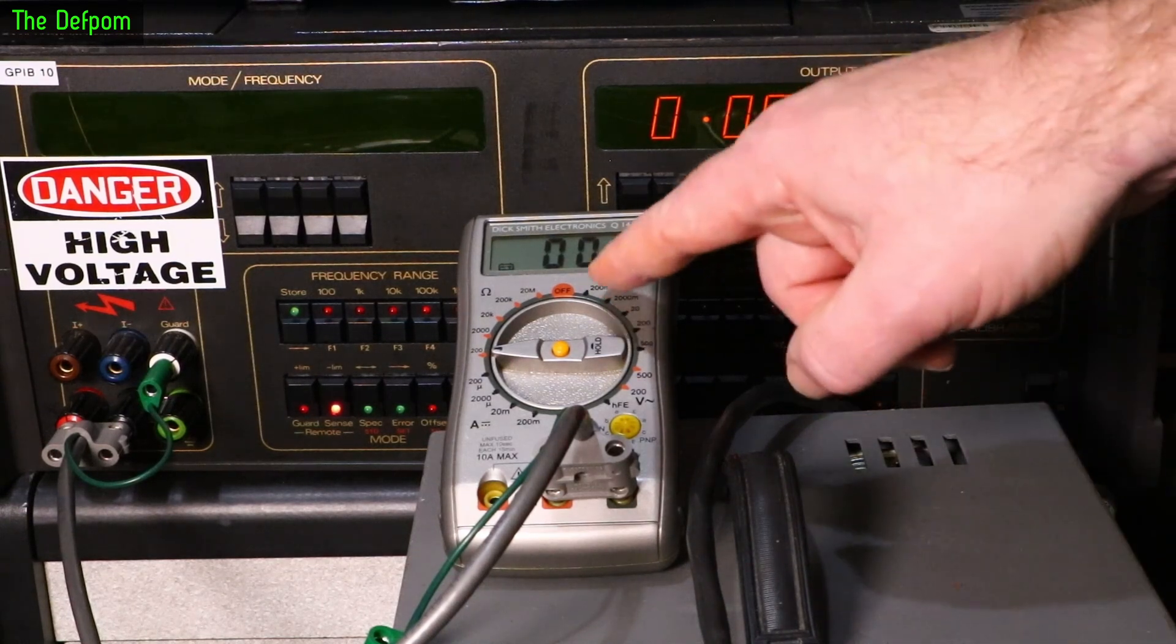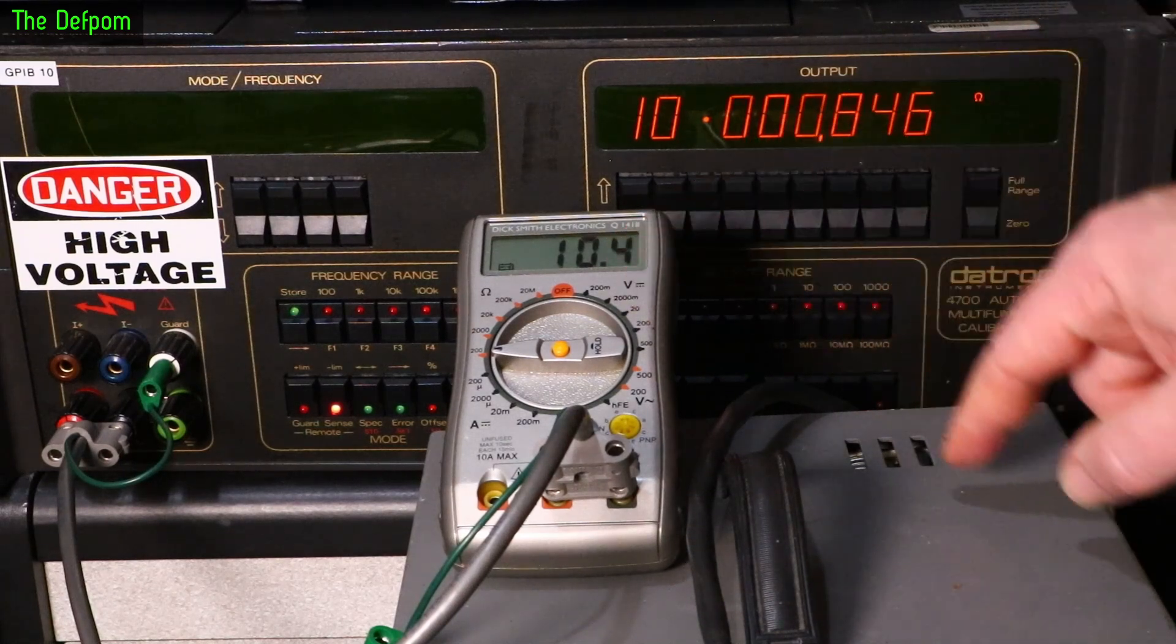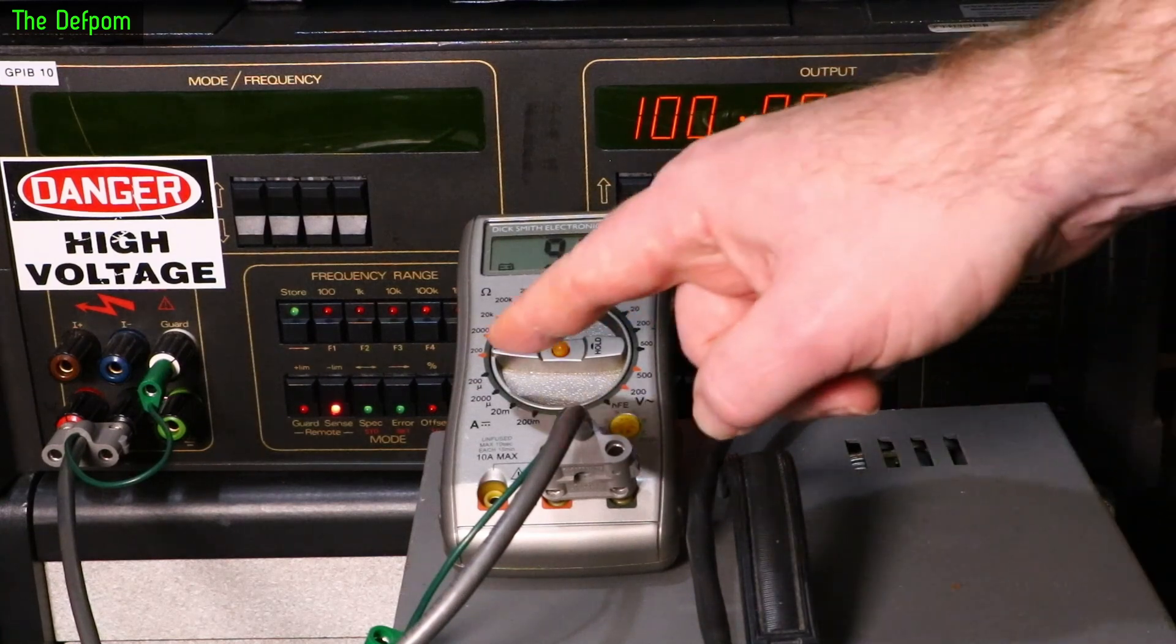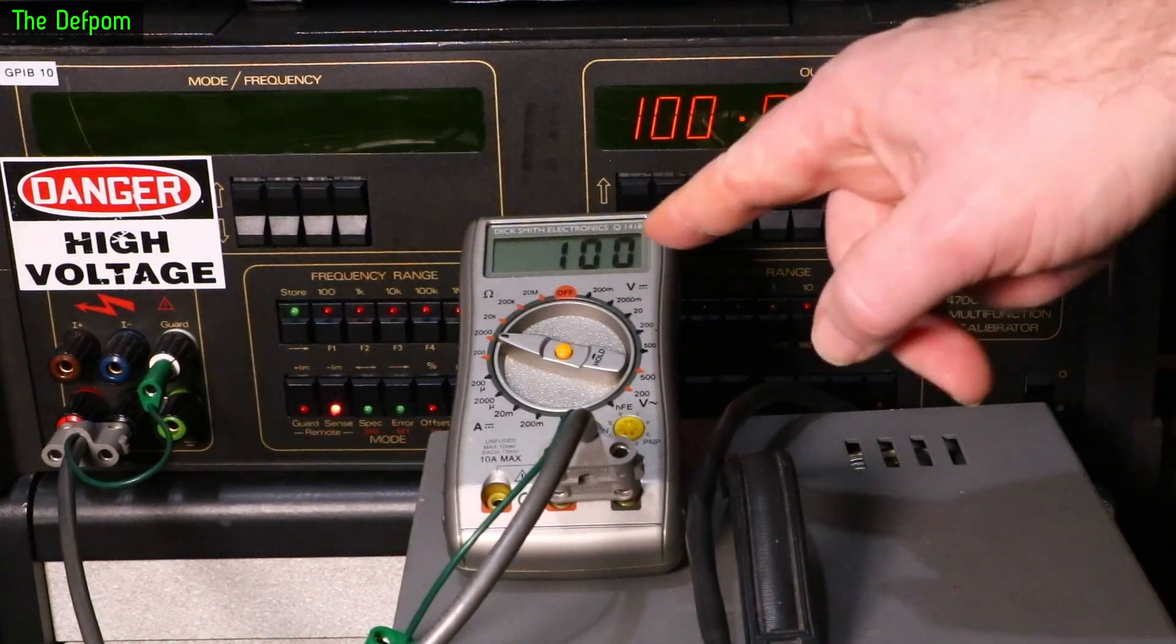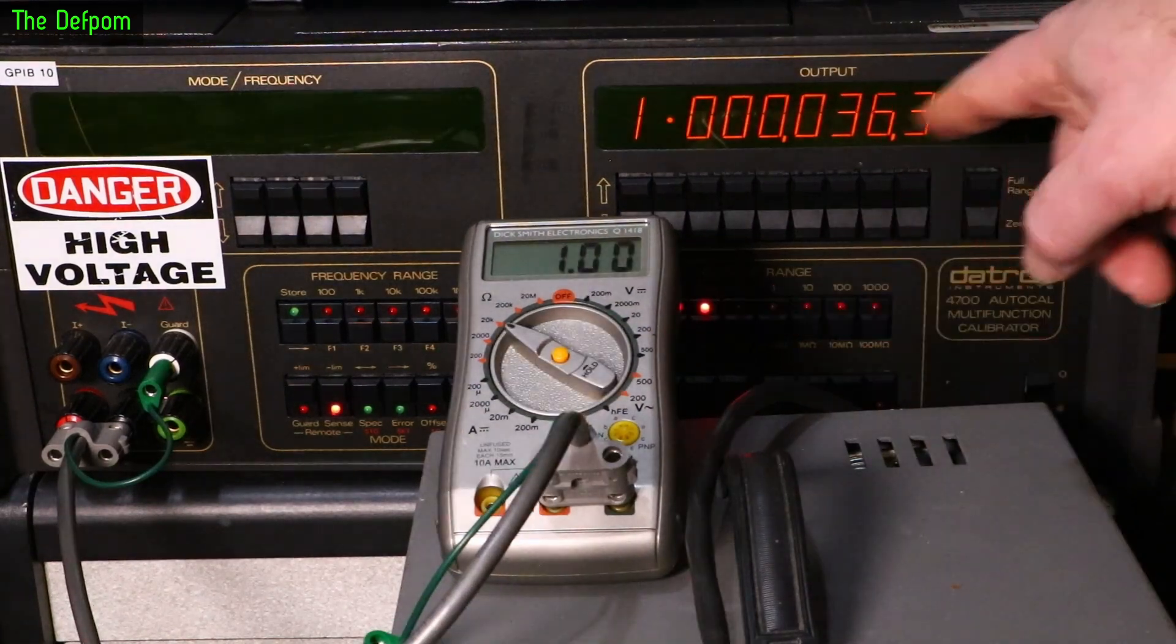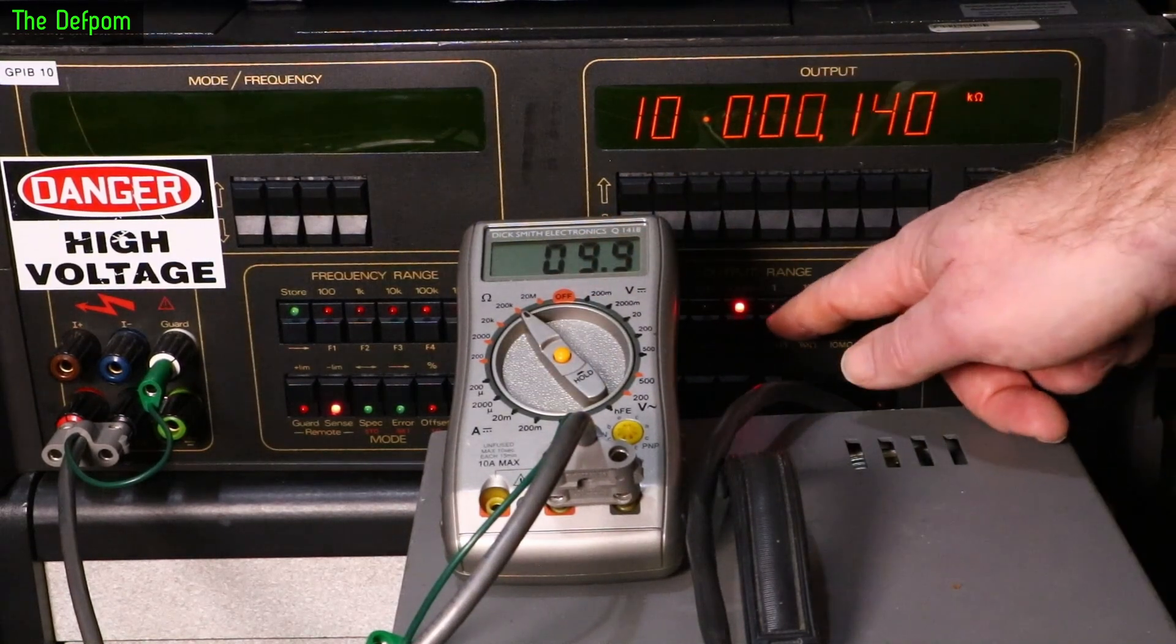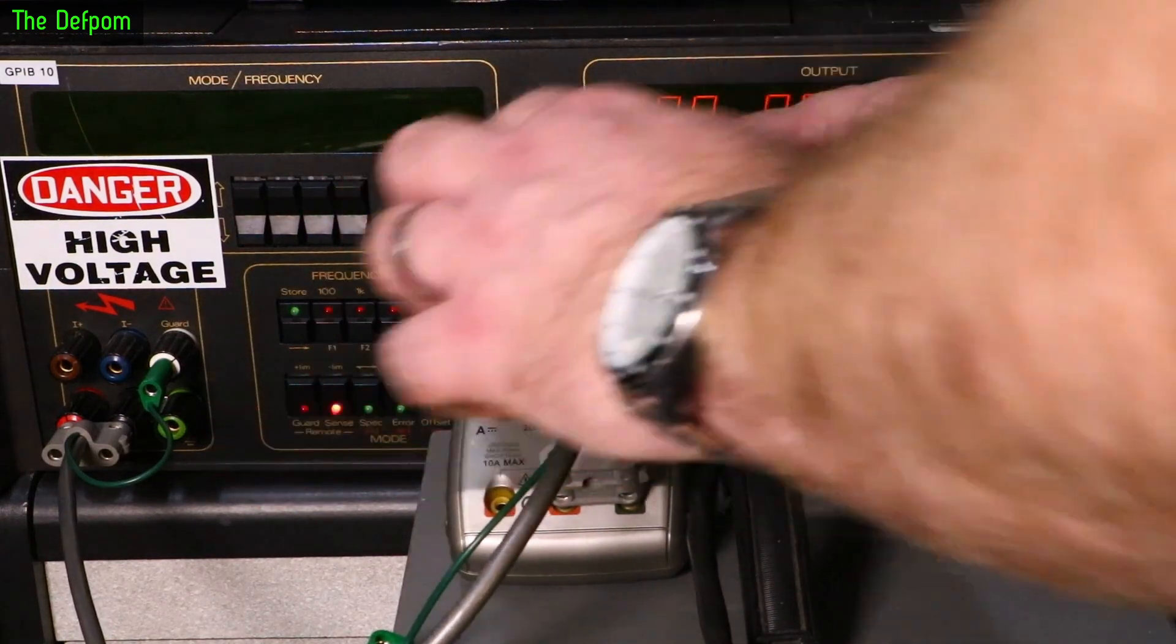So resistance mode. Zero ohms, giving 0.4. So 10 ohms, 10.4, again it's 0.4 up. 100 ohms, slightly down there. It's a 200 ohm range. Next range up which is 2k, 100 ohms is good. 1k is down seven counts. 1k bang on. 10k slightly down. 200k range, 10k slightly down. 100k slightly down.